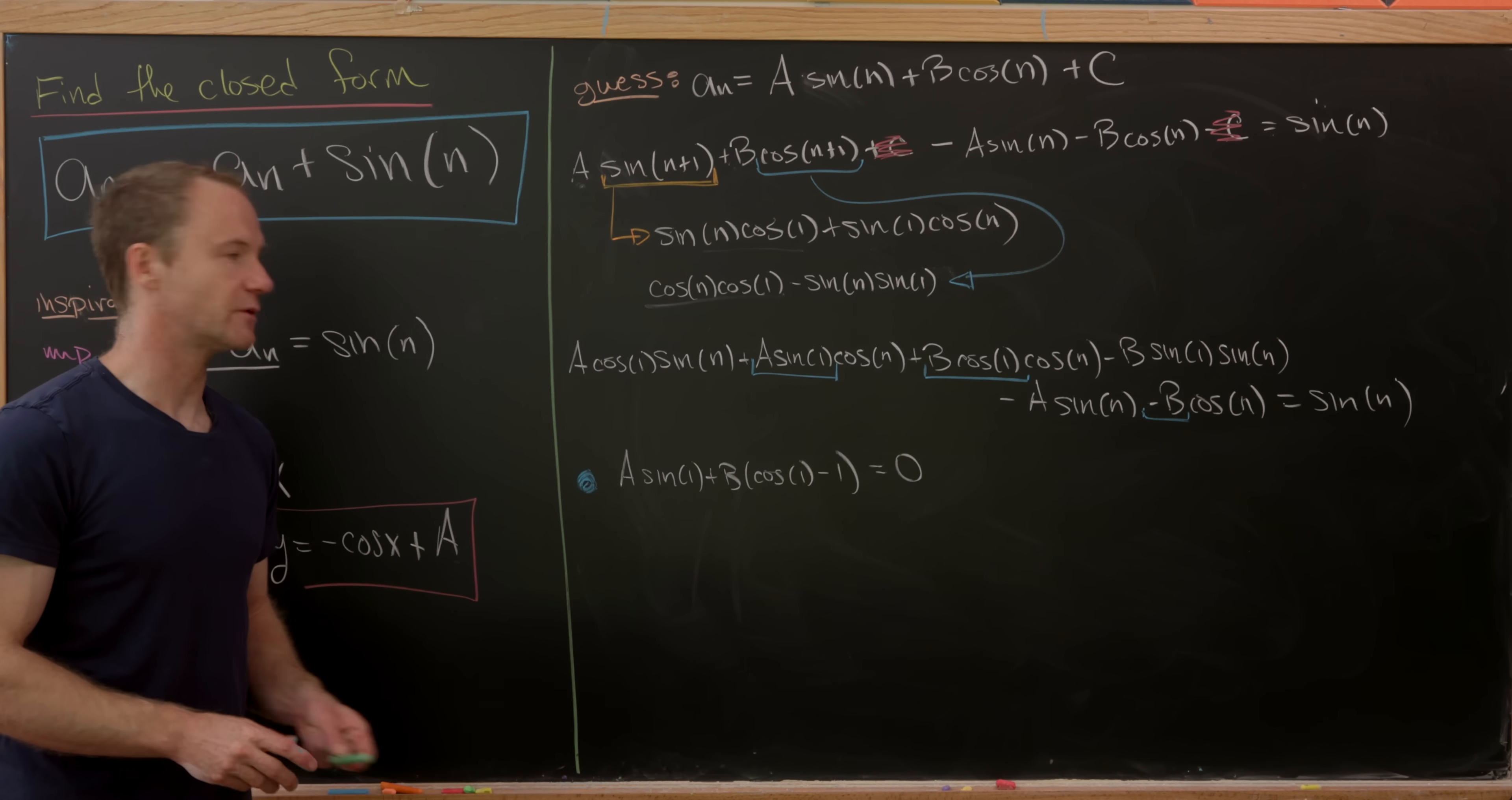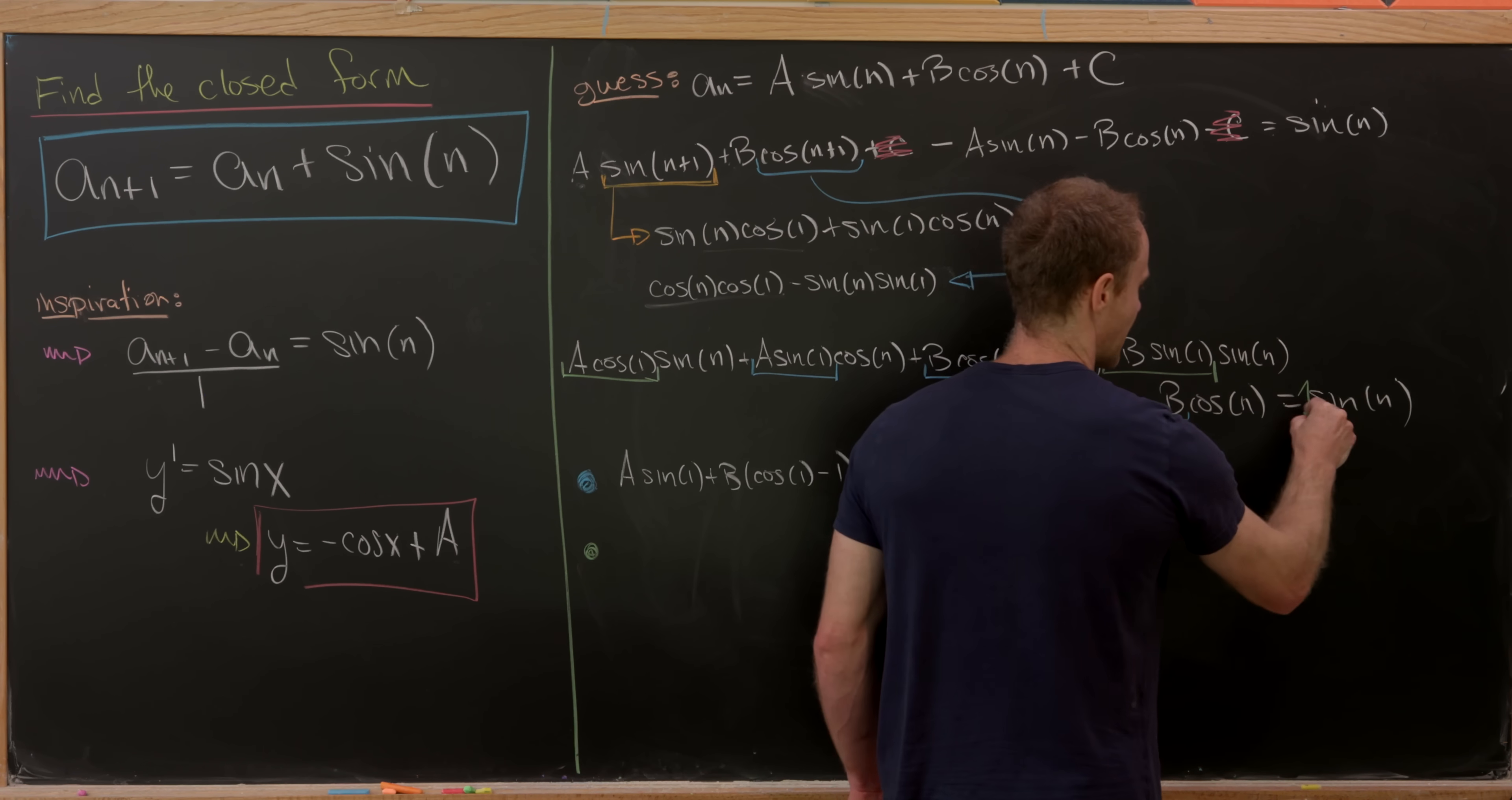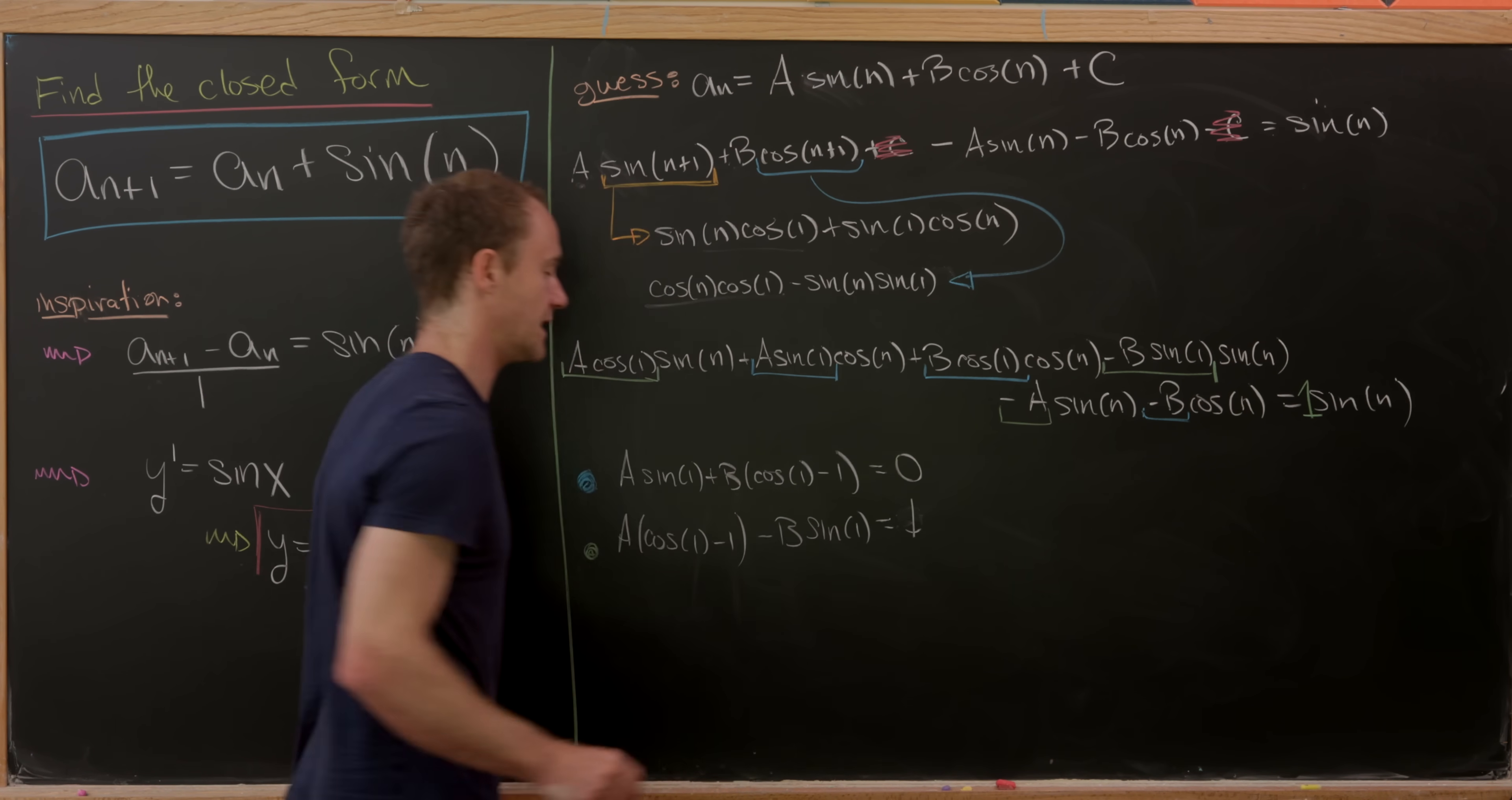Now let's do the same thing with the coefficients of sine of n. So let's see we have a times cosine of 1 right here. Then we have negative b times sine of 1. And then we have minus a right here. And then I guess we have the number 1 over here. So that'll leave us with a times the quantity cosine of 1 minus 1 from the first two terms. And then minus b times sine of 1. And that's going to be equal to 1 now.